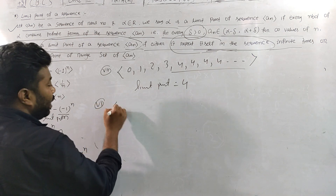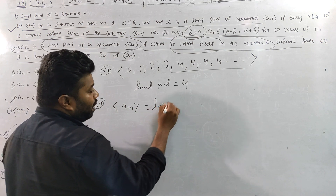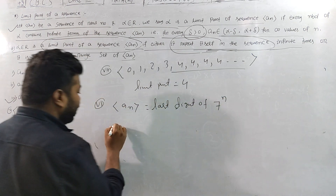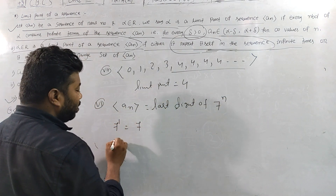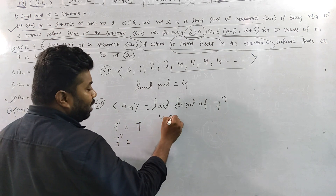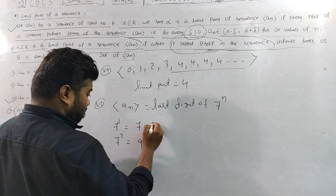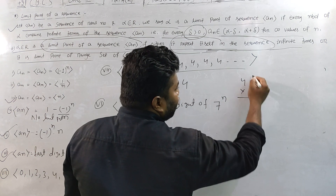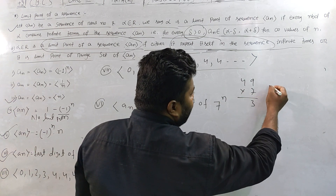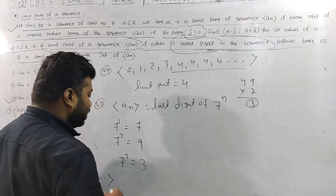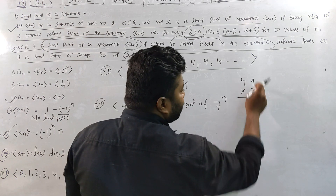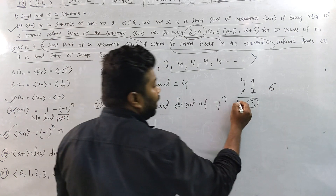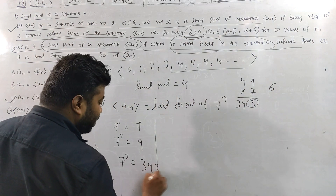The sixth question: find the last digit of 7^n. We calculate: 7^1 = 7, last digit 7; 7^2 = 49, last digit 9; 7^3 = 343, last digit 3; 7^4 ends in 1 since 343 times 7 gives last digit of 63, which is 3.